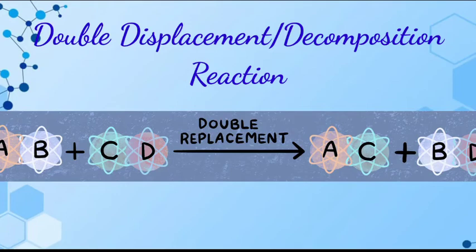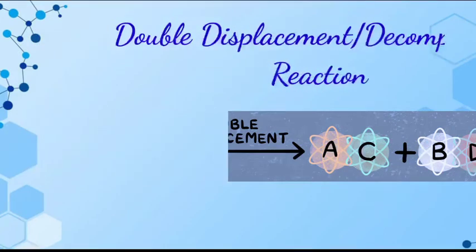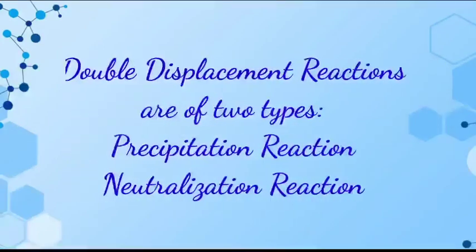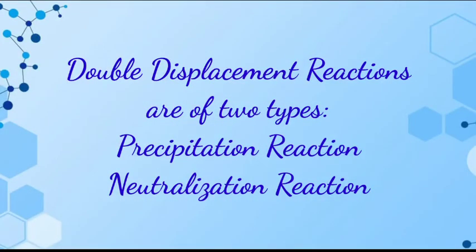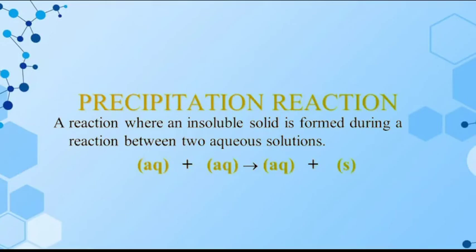This reaction has two types. First is precipitation reaction and the second is neutralization reaction. Precipitation is a chemical reaction in which two compounds in their aqueous state react to form a solution as a product, known as precipitation reaction.